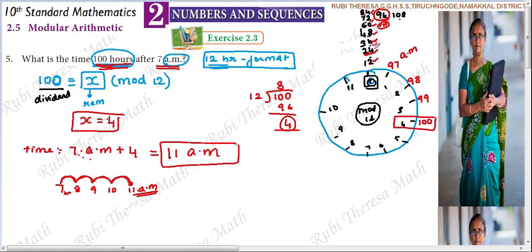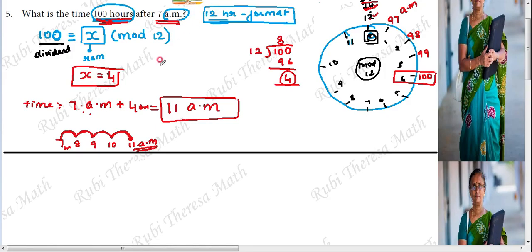Alternatively: in 24 hours one full day is complete, so the numbers start again — am, pm, am, pm, am, pm. After 96 hours, 4 days are complete. Then at 97 hours the 5th day's am starts again. So this gives us 4am as the remainder. Therefore 7am plus 4 hours is 11am. That is one method.